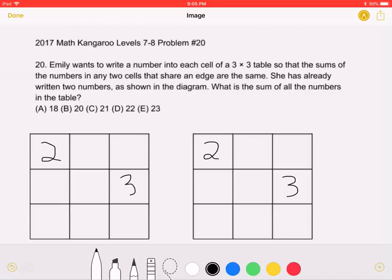This is the 2017 Math Kangaroo, Levels 7 and 8, Problem Number 20. Emily wants to write a number into each cell of a 3x3 table so that the sums of the numbers in any two cells that share an edge are the same. She has already written two numbers, as shown in the diagram. What is the sum of all the numbers in the table?